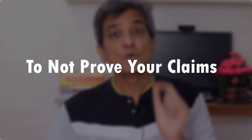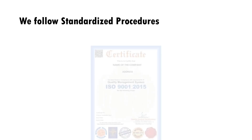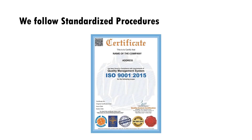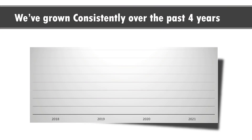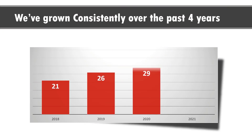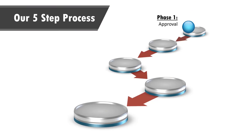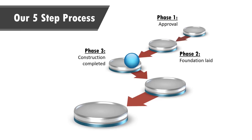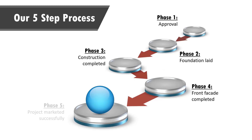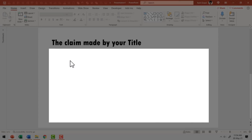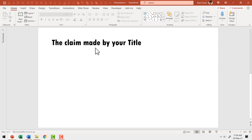The mistake is to not prove your claims. If your title claims 'we follow standardized procedures,' then your content should show a relevant certificate to validate the claim. If your title claims 'we have grown consistently over the past four years,' then your content should show a chart that corroborates the claim. If your title claims 'we follow a five step process to assess customer needs,' then your slide area should show the five steps. Remember, this area is your canvas to provide visual evidence to the claim you made on your title.